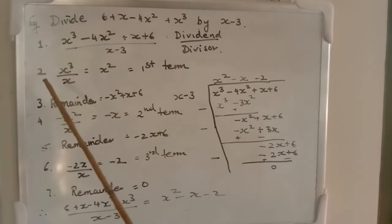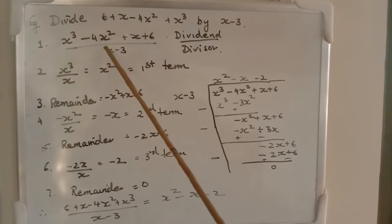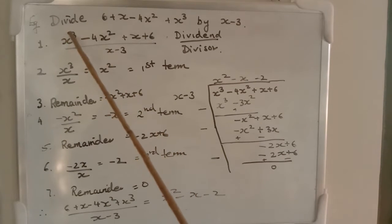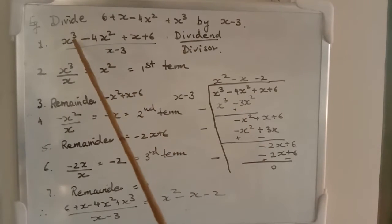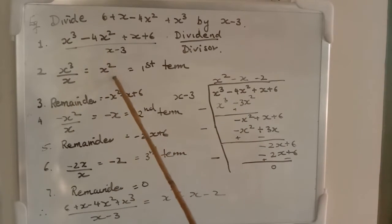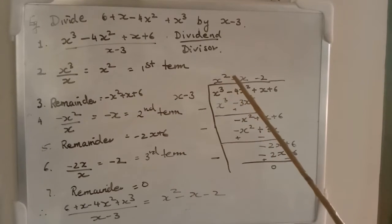Second step: we have to divide the first term of the dividend by the first term of the divisor. We will divide x³ by x. We get x². So, the first term of the quotient is x².